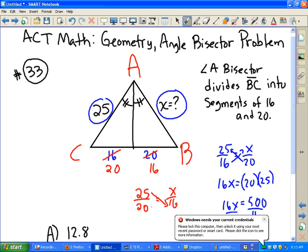And we do a cross product here. And we're going to have 20X is equal to 16 times 25. That's 400. And if you divide by 20, 400 divided by 20, that's 20.